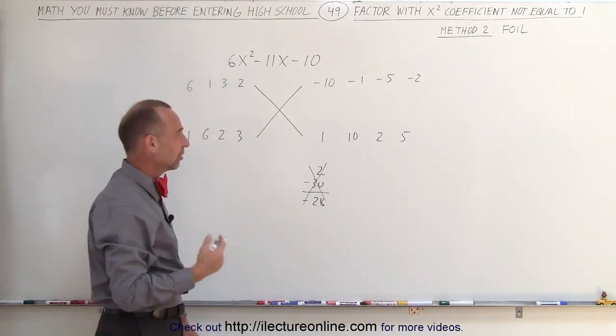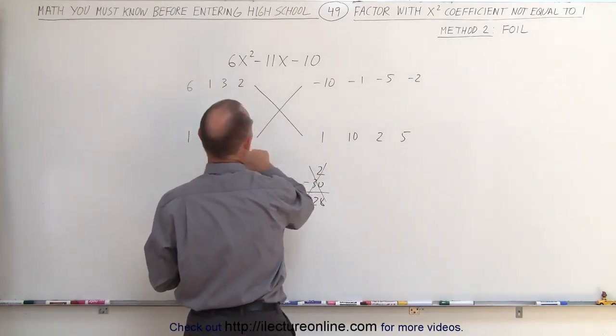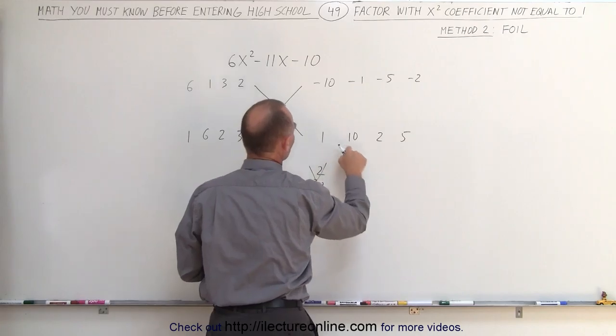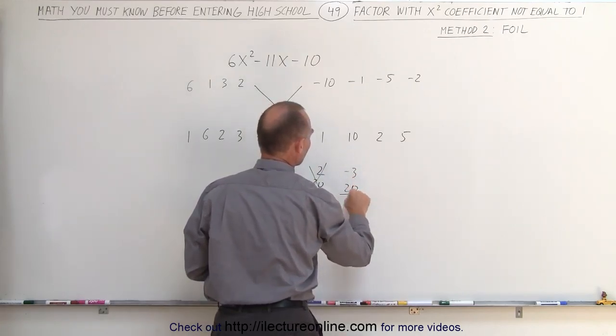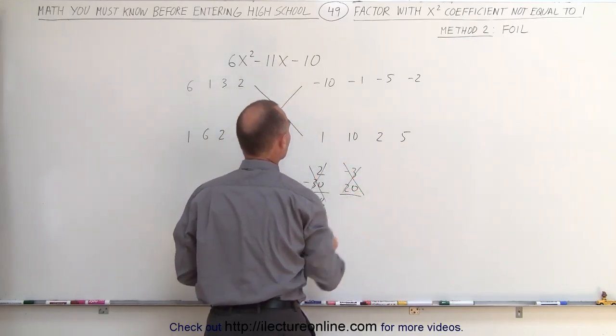In some cases you can see right away that you would not get a good combination. For example, here we get 3 times negative 1, which is negative 3, and 2 times 10, which is a positive 20. Notice when I add that together I get a positive number, which is not negative 11, so that doesn't count either.